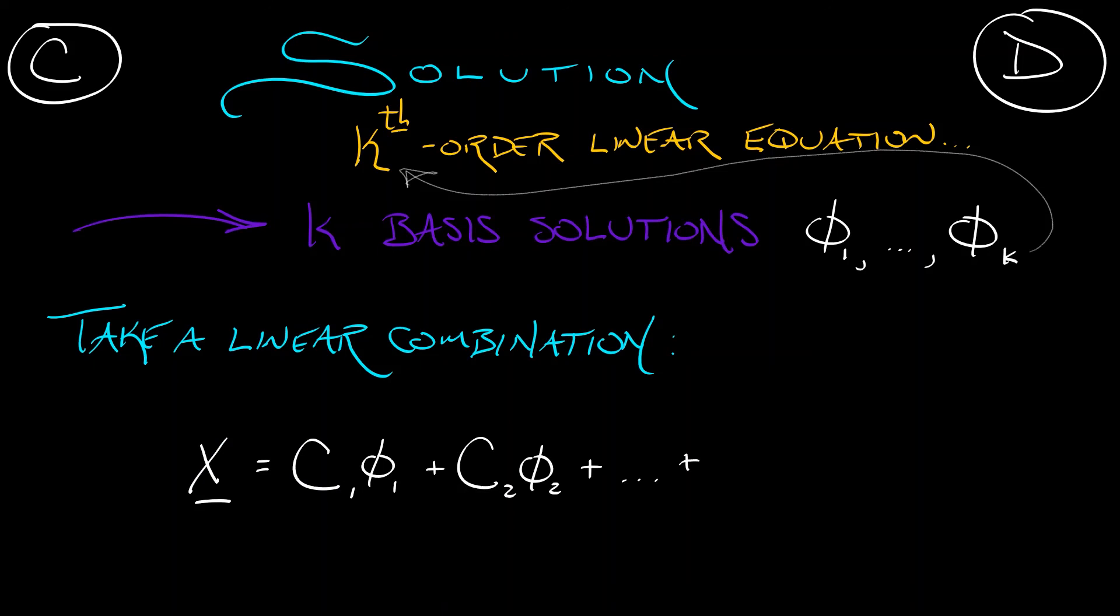x is going to be c1 phi 1 plus c2 phi 2, all the way up through ck phi k, where these constants, the c's, depend on the initial conditions. And I say initial conditions because you're going to need more than one. In 2D, we needed two initial conditions. In a k-th order equation, we need k initial conditions to solve for these constants.